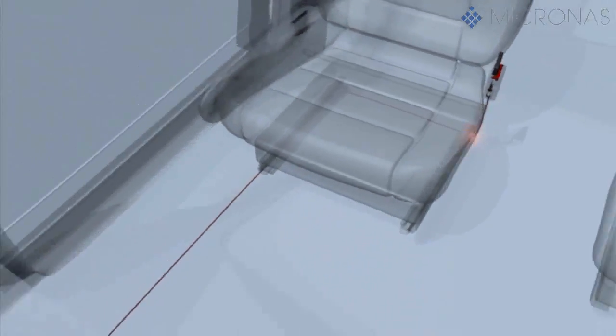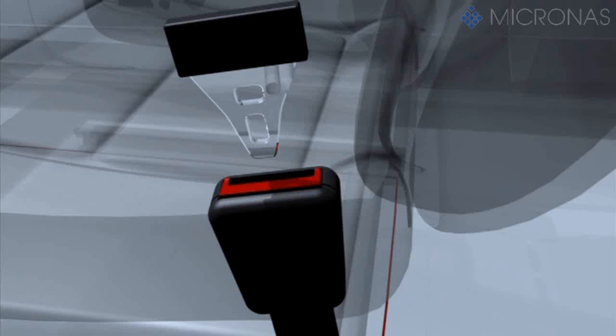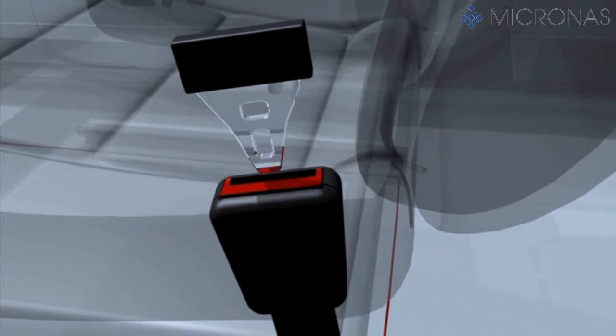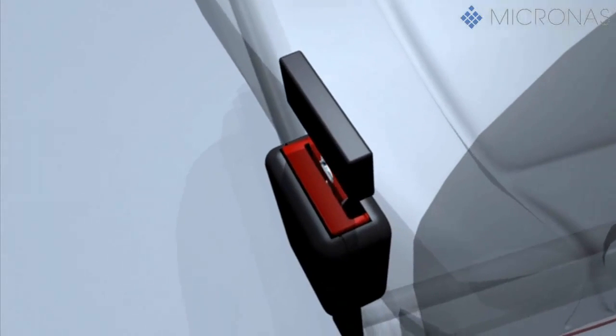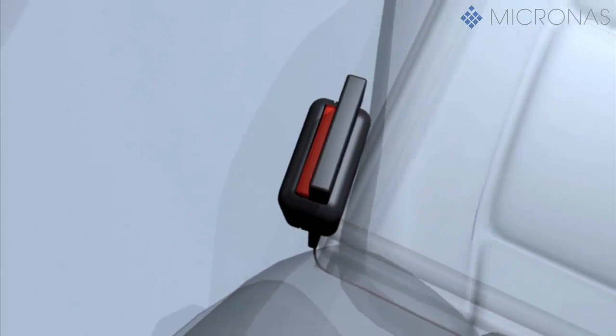In this application, the strap-in information is also transmitted to the airbag control unit via the hall sensor and, depending on seat belt situation, the airbag will be ignited earlier or later to avoid passenger injuries caused by the airbag.